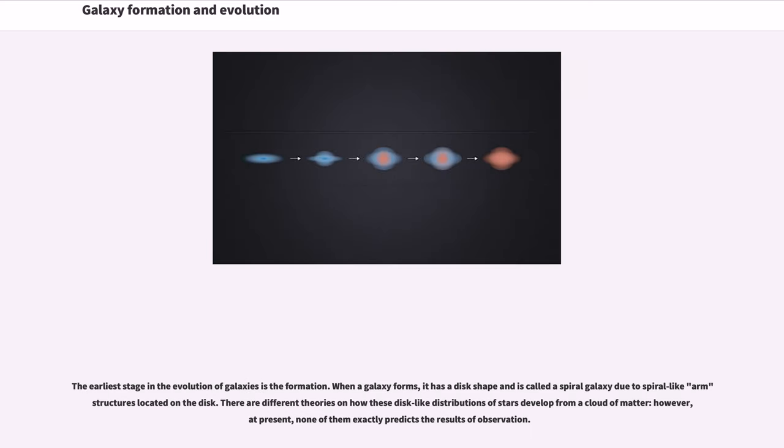The earliest stage in the evolution of galaxies is the formation. When a galaxy forms, it has a disk shape and is called a spiral galaxy due to spiral-like arm structures located on the disk. There are different theories on how these disk-like distributions of stars develop from a cloud of matter, however, at present, none of them exactly predicts the results of observation.